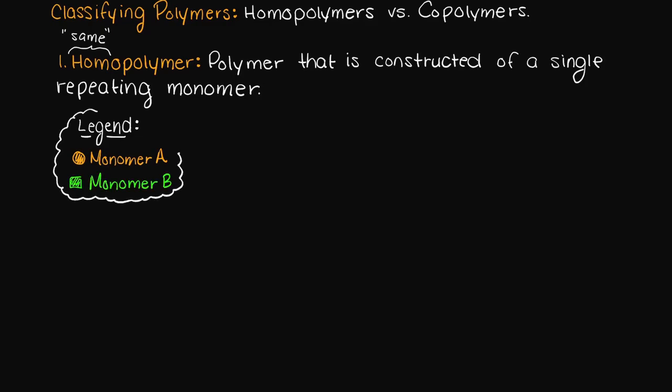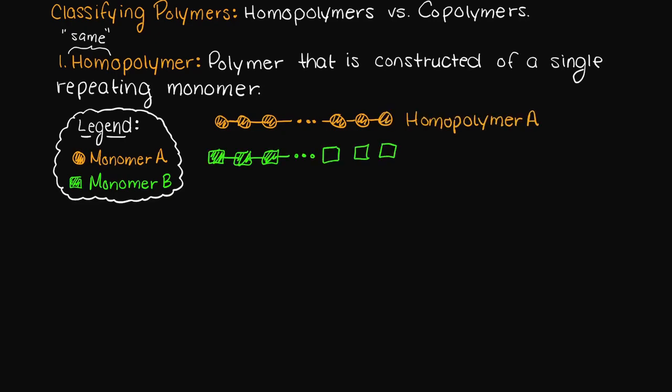If we have these orange balls representing monomer A and these green squares representing monomer B, then we can have two different homopolymers. One constructed only of monomer A and another constructed of only monomer B.